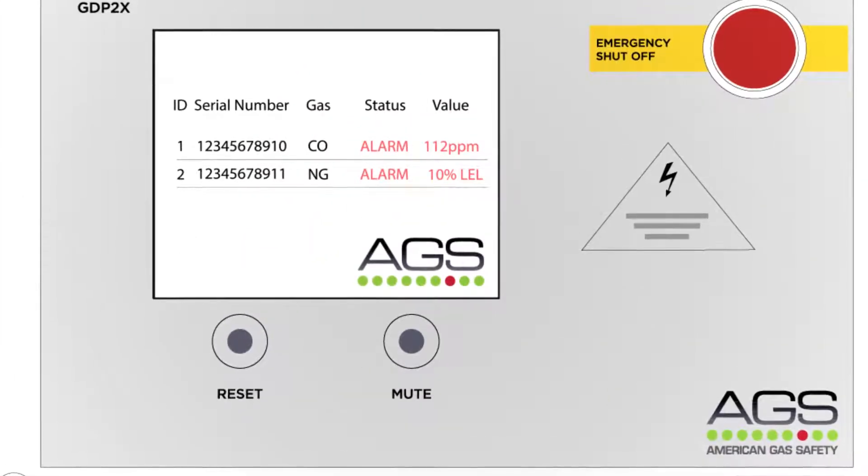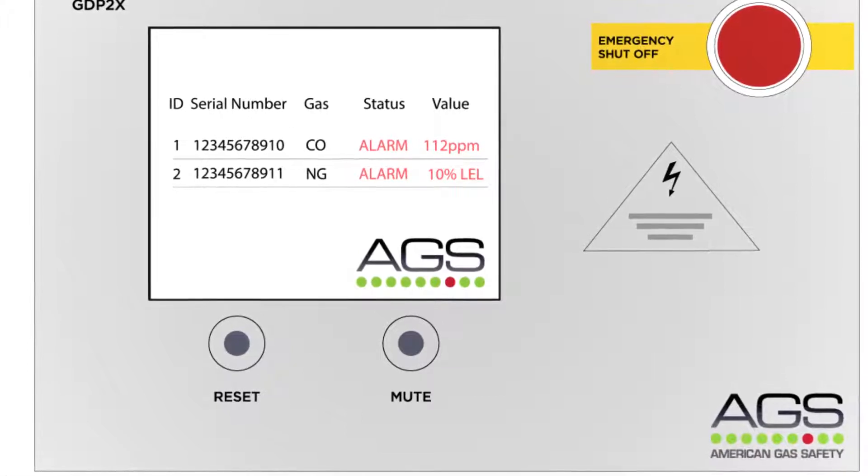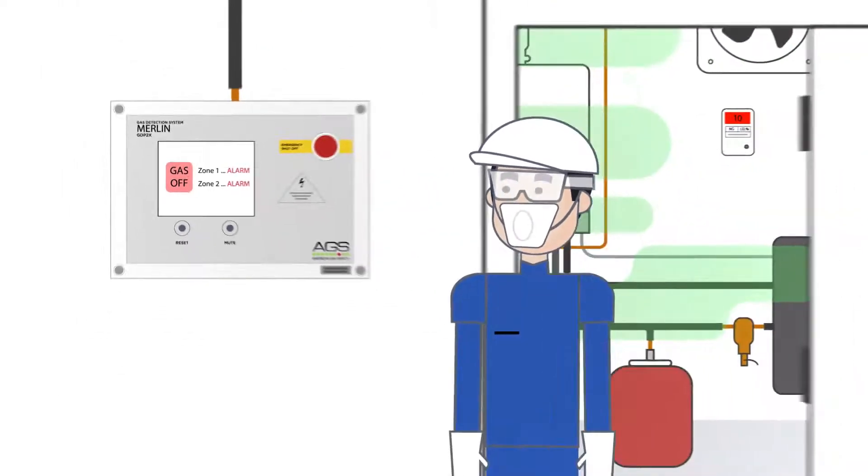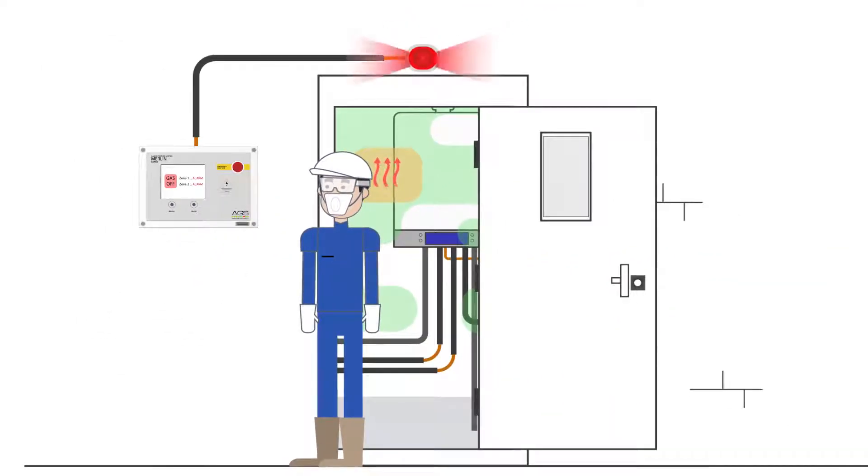In emergency situations such as a rise in dangerous gas levels, the Merlin range provides audible, visual alarms and outputs to automatically shut off the gas supply or electrical supplies, isolating the imminent danger.